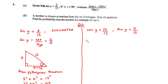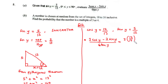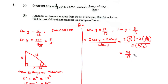Now let's evaluate the fraction: 3 cos y minus 2 sin y, all divided by 6 tan y. That equals 3 times 12 over 13, minus 2 times 5 over 13, all divided by 6 times 5 over 12. Multiplying: 3 times 12 gives 36 over 13; 2 times 5 gives 10 over 13; and 6 times 5 over 12 simplifies — 6 goes into 12 twice — giving 5 over 2.